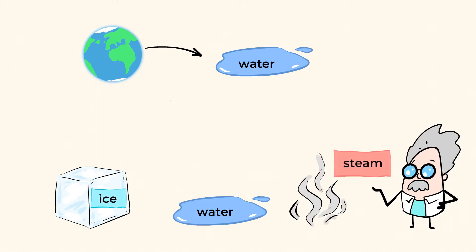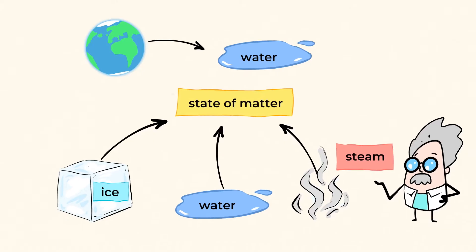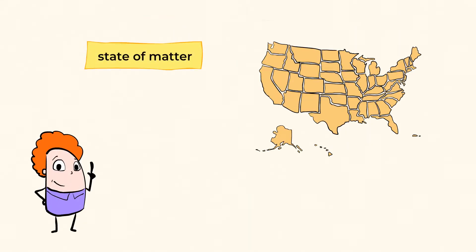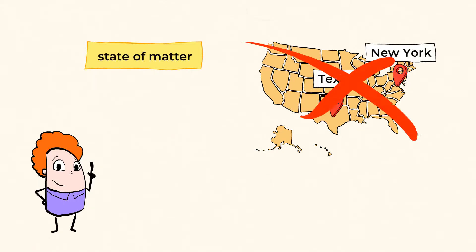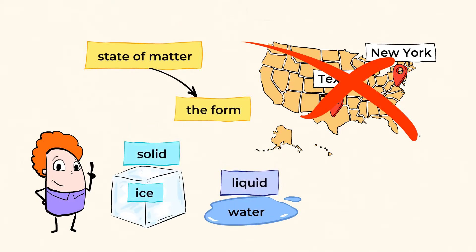These are all examples of states of matter. A state doesn't just mean a state where someone lives in the United States, like Texas or New York. The kind of state I'm referring to is the form that something takes, such as ice being solid, water being liquid, or steam being gas.